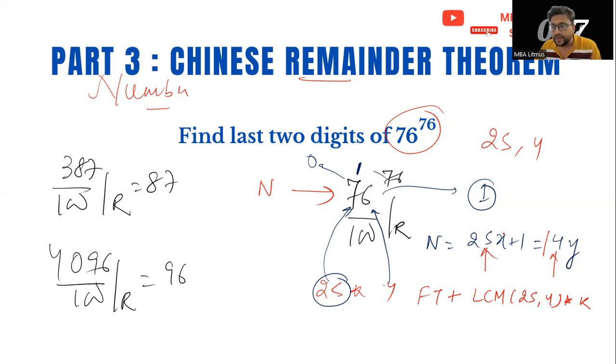The general term which will satisfy both these equations will be the first term which satisfies both plus LCM of 25 and 4, which are the coefficients of X and Y, into another variable K. What is the first term? If I put X equals 1, this becomes 26. I can't get an integer for Y. If I put X equals 2, then it will be 51, not divisible by 4. If I take the next number, 25 into 3, 75 plus 1 is 76. This number is divisible by 4Y.